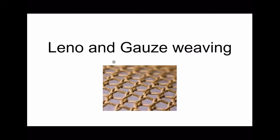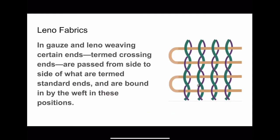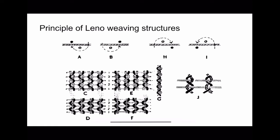Welcome again to the next part of the leno and gauze weaving lecture. As we have already discussed about the definitions of leno weaving and gauze fabrics, to summarize: the most basic point is that in leno weaving, the weft yarn is locked or held in between the half twist of standard and crossing warp yarns, as we can see here.